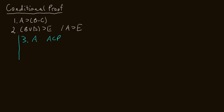From lines one and three we can use modus ponens to derive B and C — so line four is B and C, from lines 1, 3, and modus ponens. Now I want to simplify B and C to just B, so line five is B, from line four and simplification. Now I can see my way out: I can add D onto B using addition. So on line six we write B or D, from line five and addition.